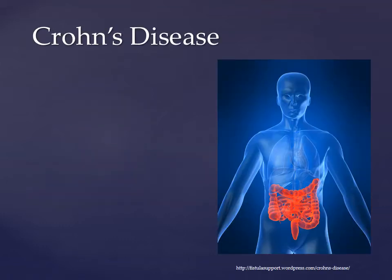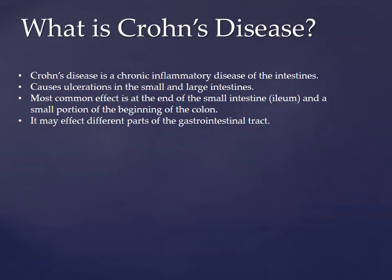My name is Griffin, and I'll be talking about how Crohn's disease is associated with the extracellular matrix. Crohn's disease is a chronic inflammatory disease of the intestines — it causes ulcerations in the small and large intestines. The most common effect is at the end of the small intestine, or the ileum, and it also affects the small portion of the beginning of the colon. But it's not limited to just those parts — it can affect different parts of the gastrointestinal tract.